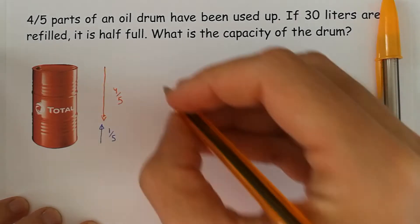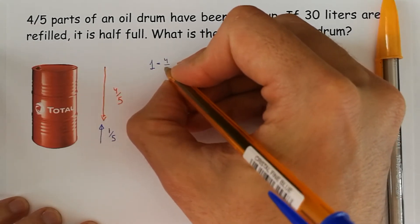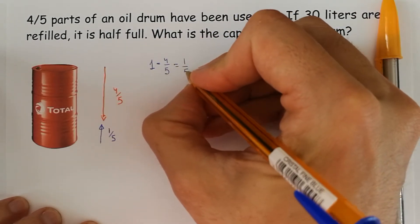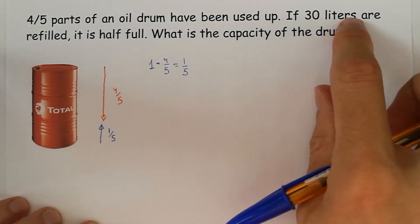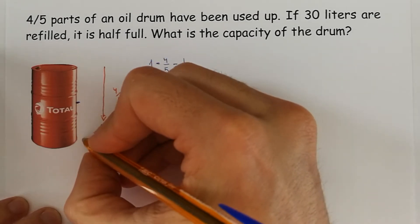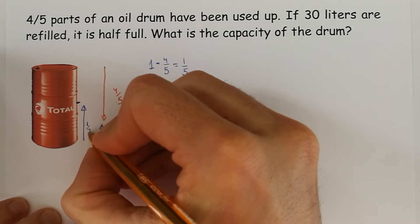This operation, we can draw, you can put it here, one minus four-fifths. We take away, we get one-fifth, and then we have 30 liters. We put 30 liters on, and we get to this mark that is like one-half of the drum.